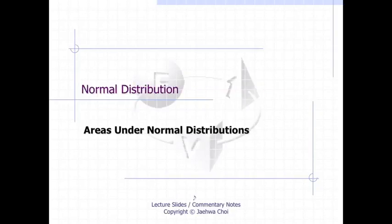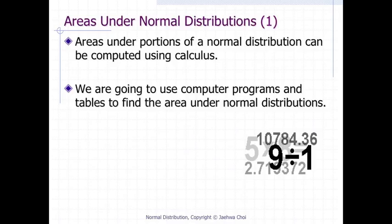Areas under Normal Distributions. Areas under portions of a normal distribution can be computed by using calculus. Since this is a non-mathematical treatment of statistics, we will rely on computer programs and tables to determine these areas.